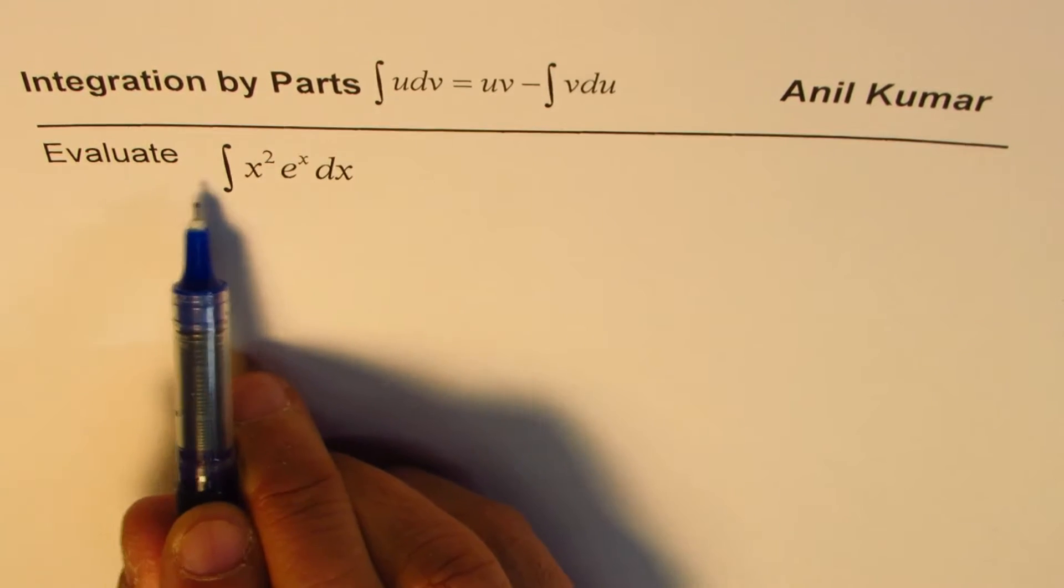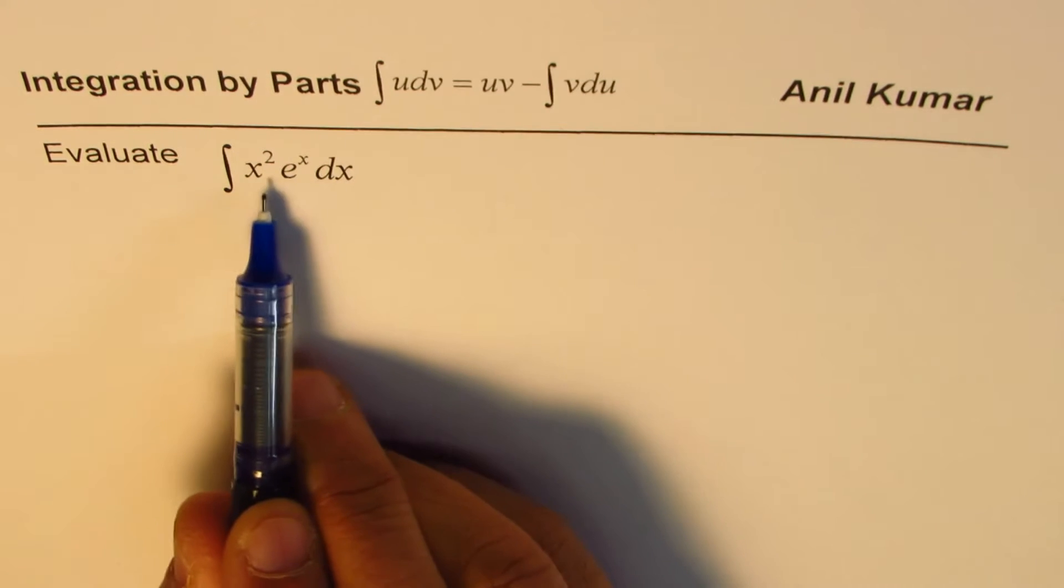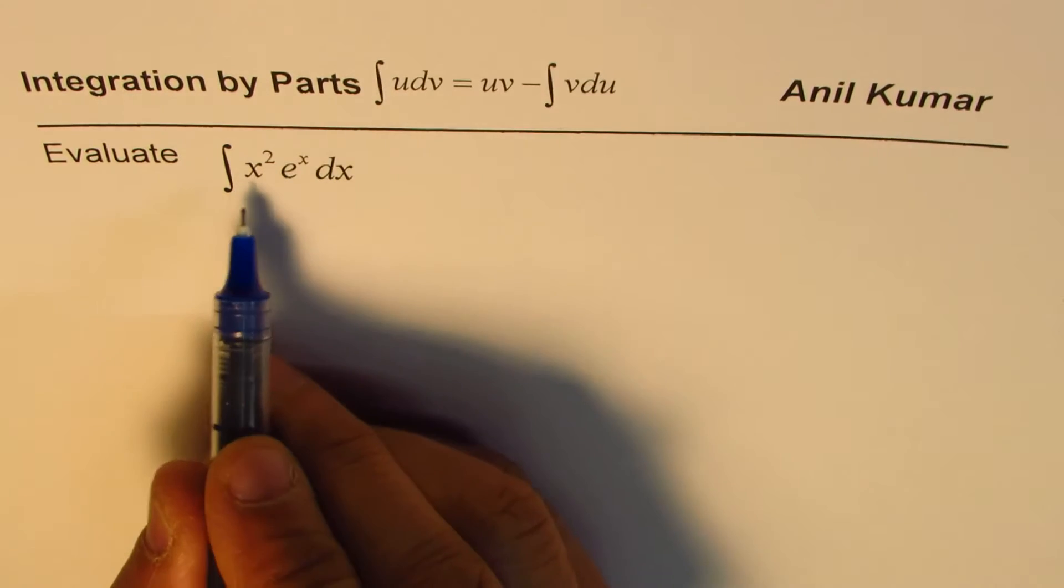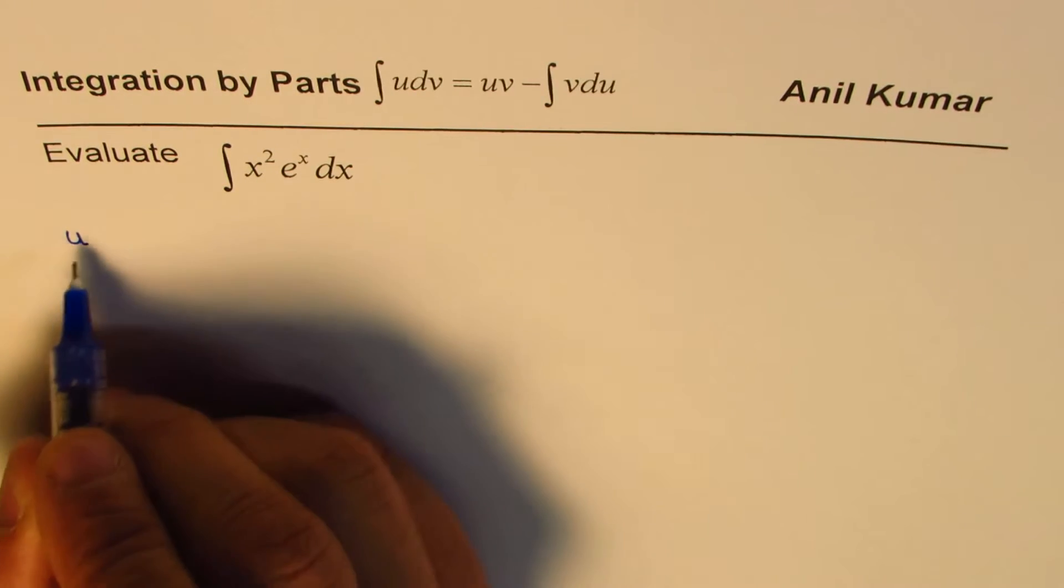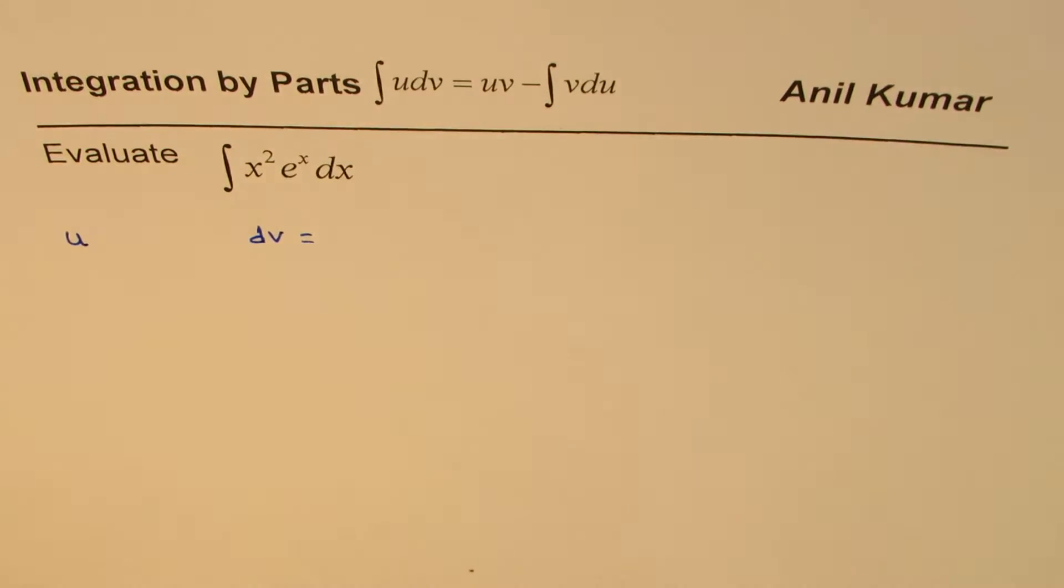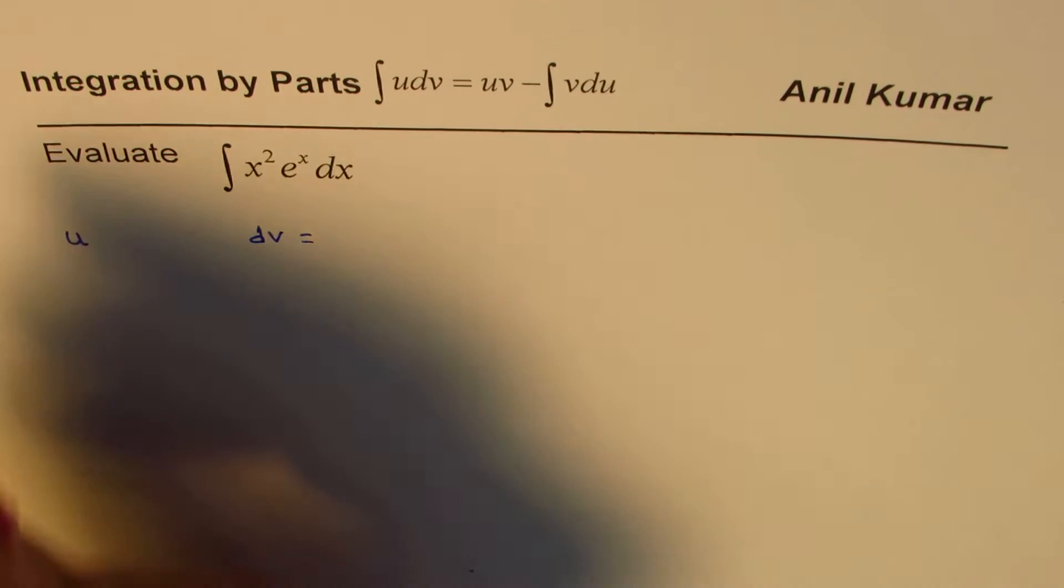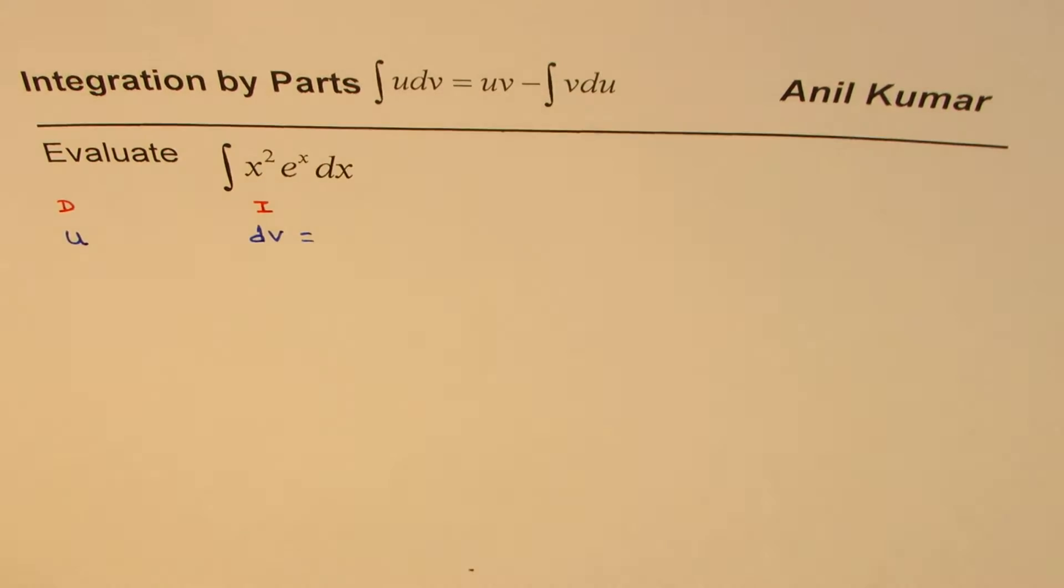In integration by parts we are normally finding the integral of product of functions. Here the question is evaluate integral of x square e to the power of x dx. So we have two different functions. Now we have to make a choice which one should we select as u, which we find derivative of, and the other one which we are going to integrate. At times we say we need to differentiate a part and we need to integrate a part. So how to split that up?